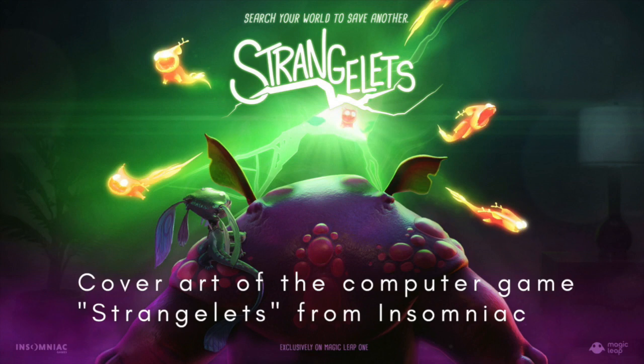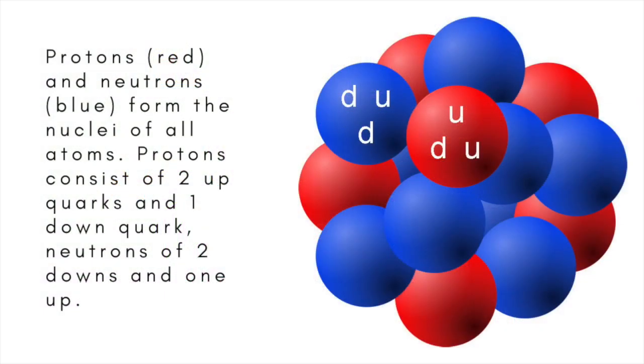A strangelet is basically a piece of matter containing roughly equal numbers of up, down and strange quarks. Up and down quarks make up the protons and neutrons found in all atomic nuclei, but strange quarks are only created momentarily in high-energy collisions.